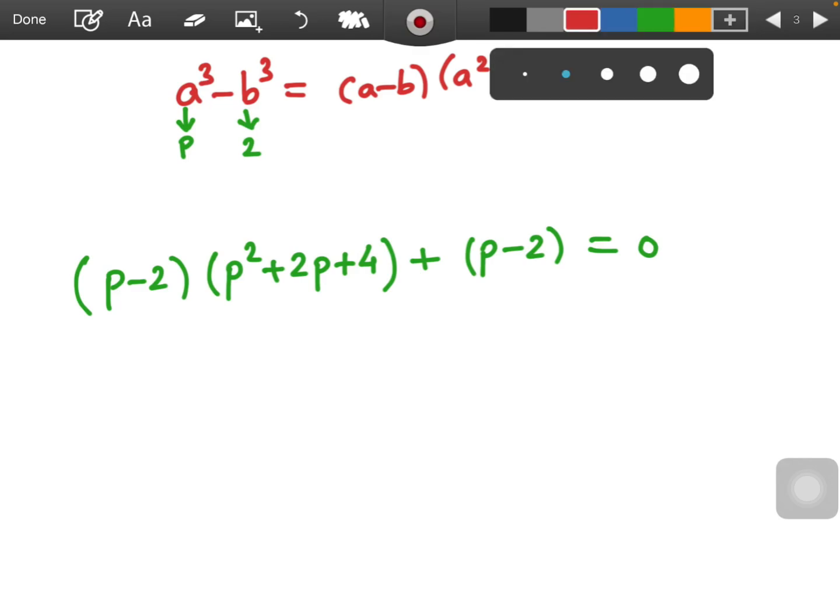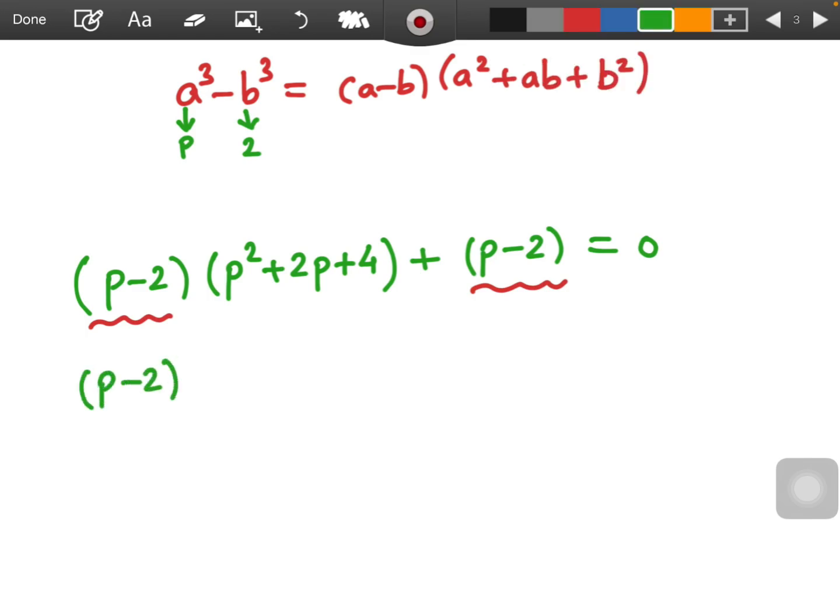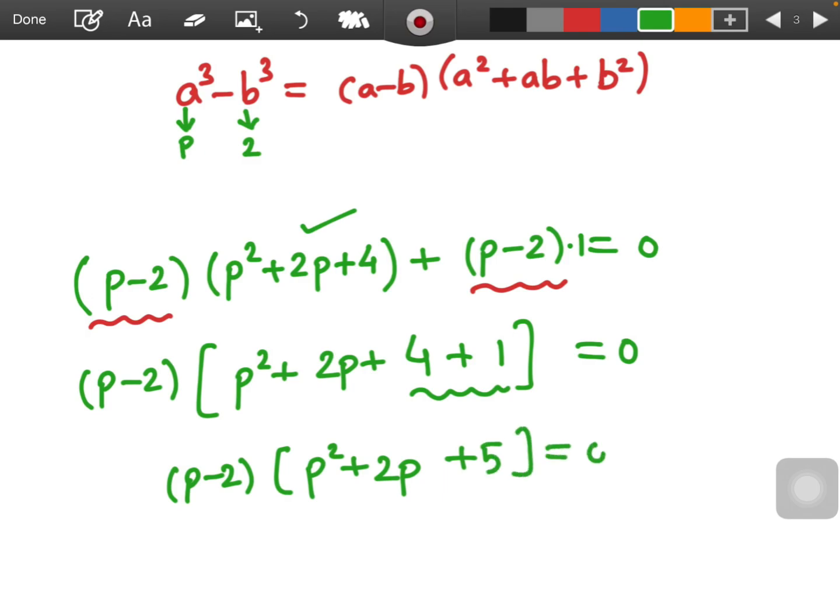Now I can see that here p minus 2 and p minus 2 is common I can take out common. So p minus 2 is common outside. So what is remaining then? Remaining term is this bracket p square plus 2p plus 4 and p minus 2 gone outside what is left there? Nothing means there is actually into 1. So 1 is left inside. p minus 2 is again like that and this is p square plus 2p, 4 plus 1 will be 5, constant 5 equals to 0.